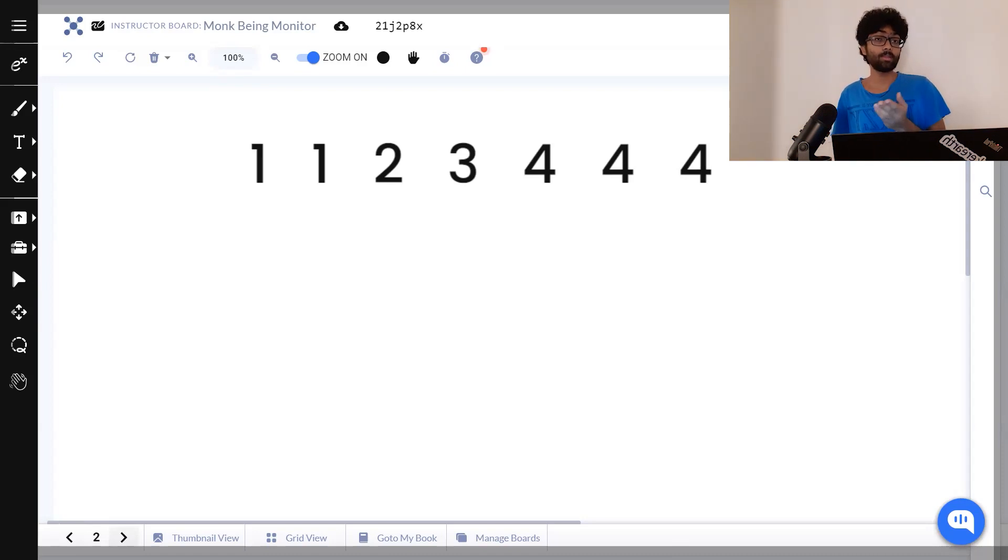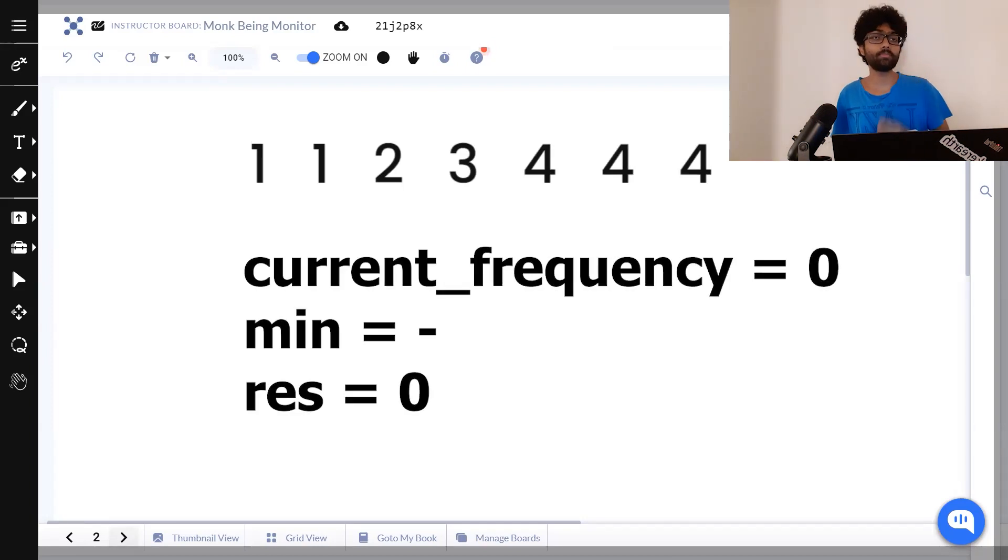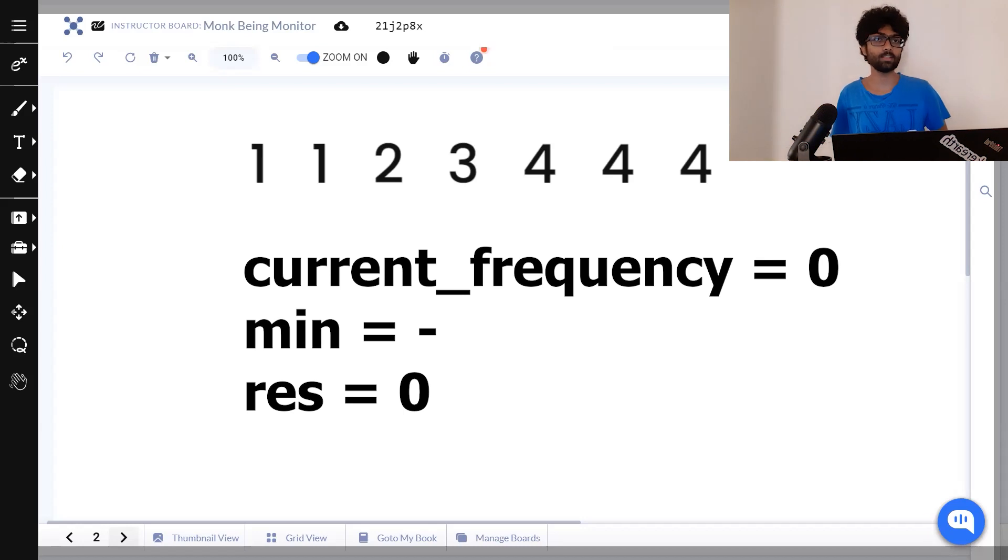The blocks of similar numbers tell us their frequencies. There are two ones, so the frequency of one will be two. There are three fours, so the frequency of four will be three and so on. What we are going to do is keep track of three variables and calculate our answer in a single iteration. The three variables are going to be the minimum frequency, the current frequency and our result.